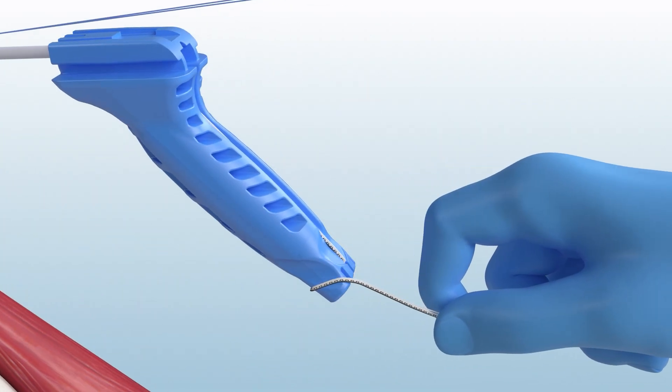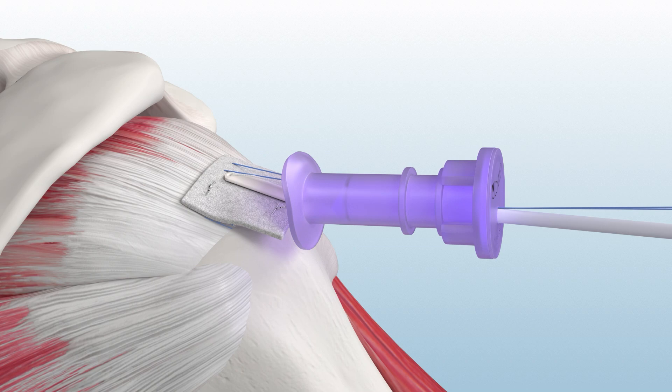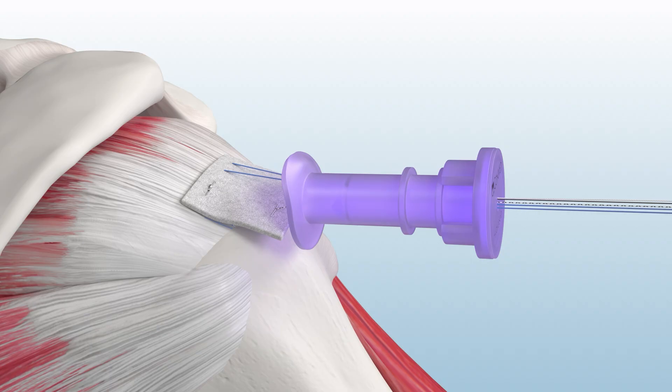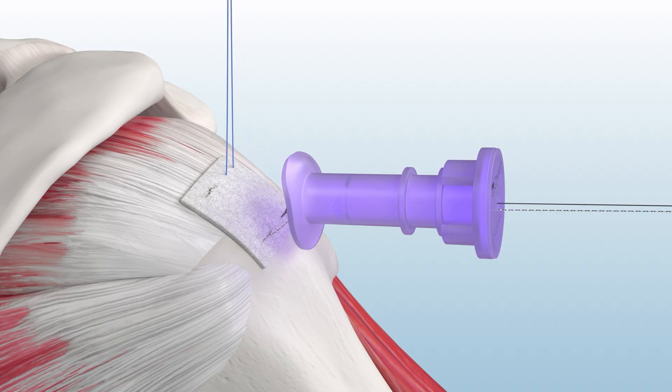Next, un-click the suture from the blue handle and withdraw the delivery instrument from the joint space. Slide the white retention suture to remove it from the implant. Then, tie and cut the remaining medial suture through an accessory portal.